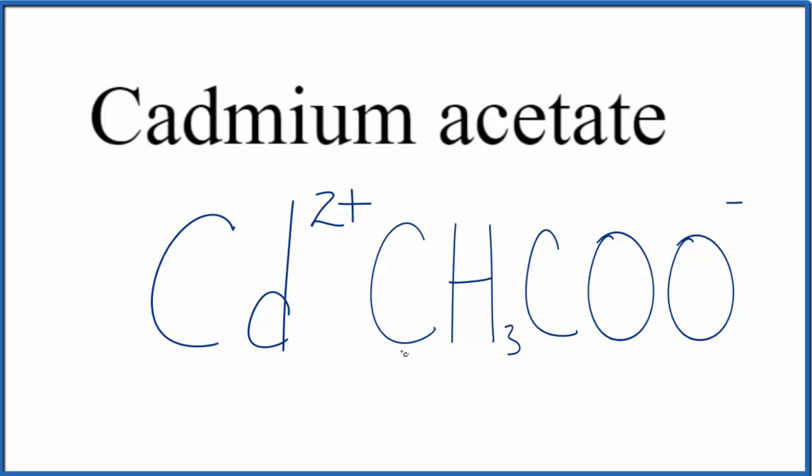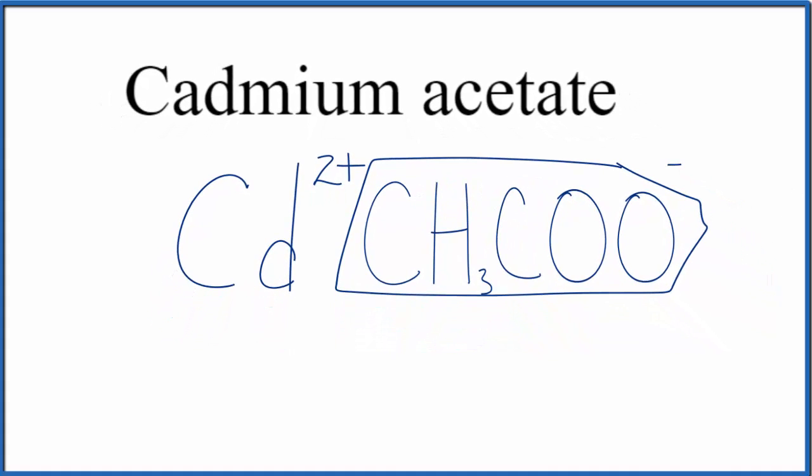That gives us CH3COO, and the whole ion here has an ionic charge of 1-. You'll also see it written this way. Both ways are equivalent, so let's go with this one up here.